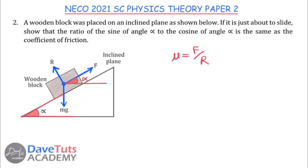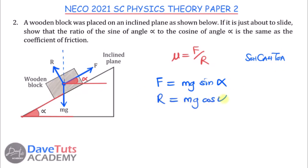Resolving along horizontal and vertical components, the force upward to the plane is mg sin α, and the normal reaction R is mg cos α, where mg is the weight of the block acting downward. Therefore the coefficient of friction μ = F/R = mg sin α ÷ mg cos α = sin φ / cos φ, which proves the required ratio.